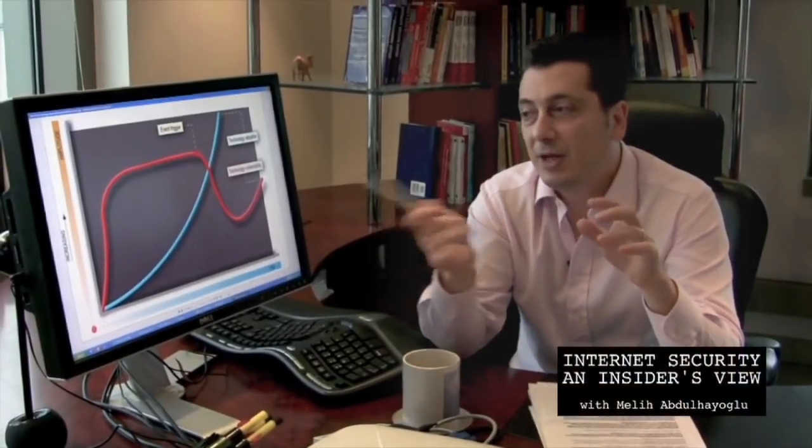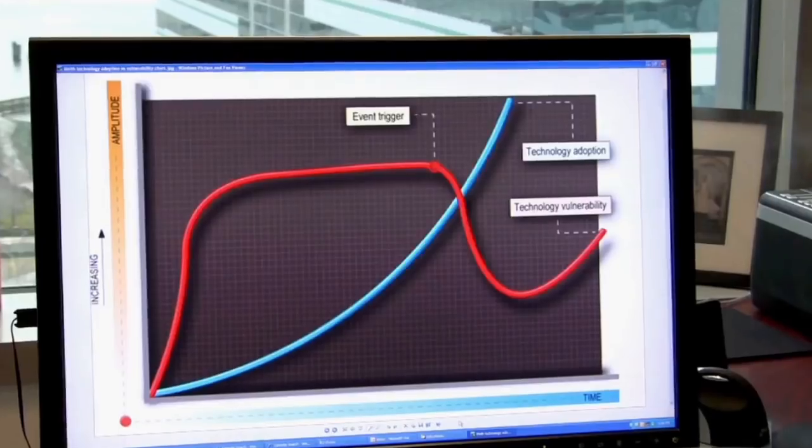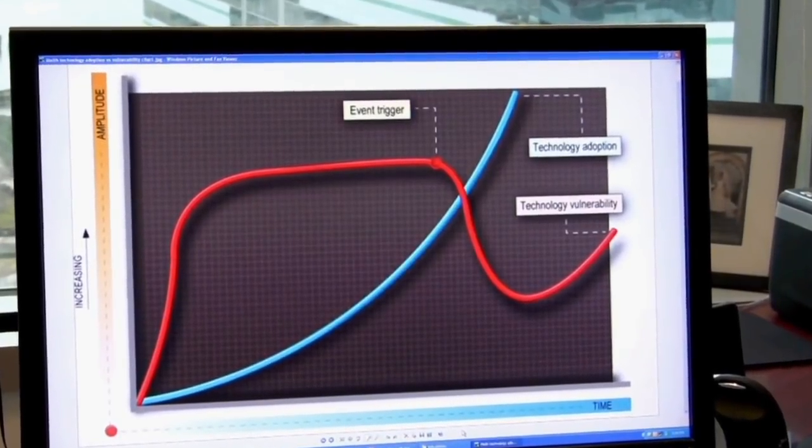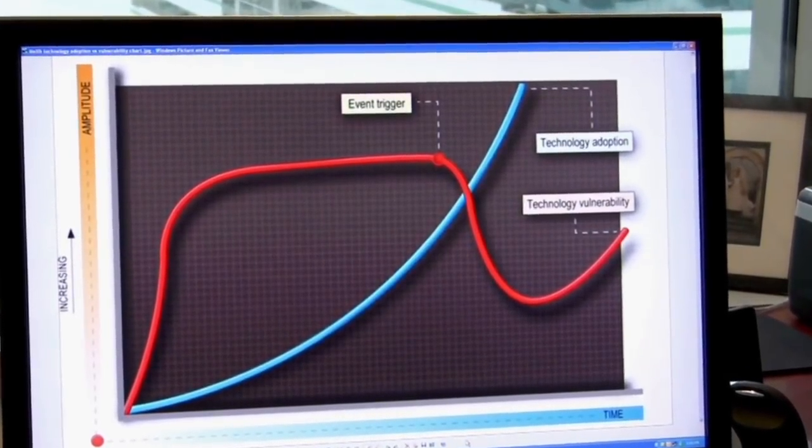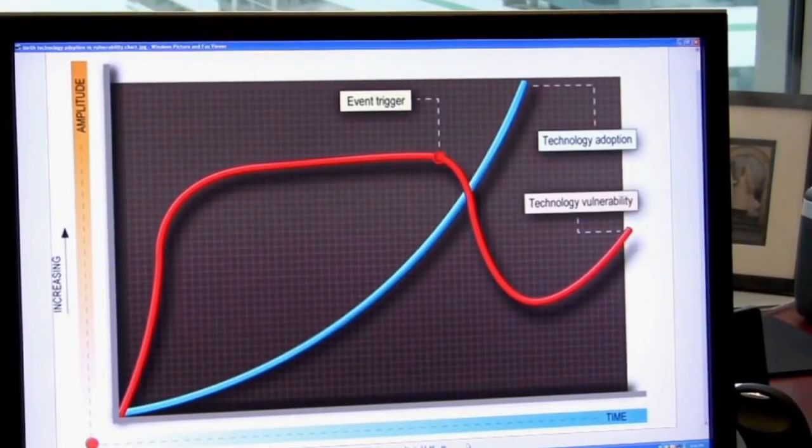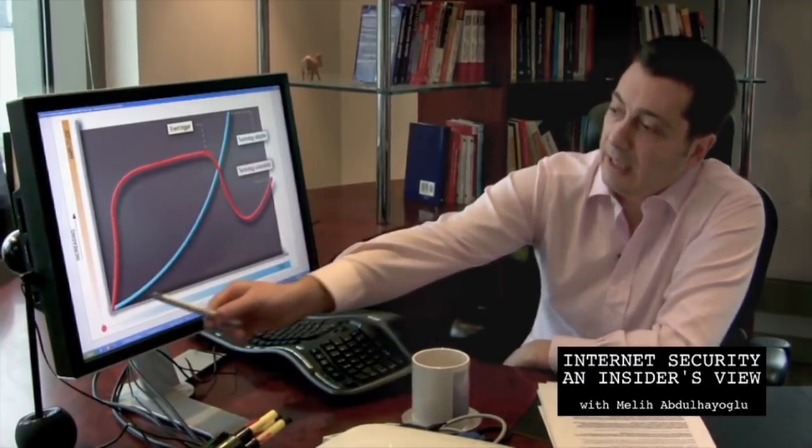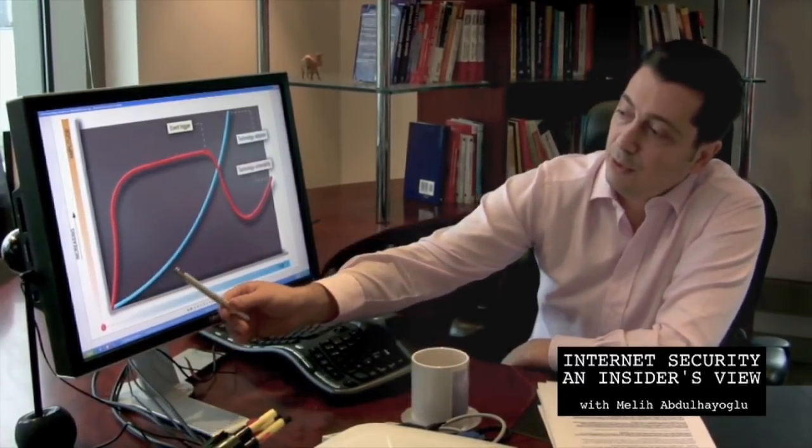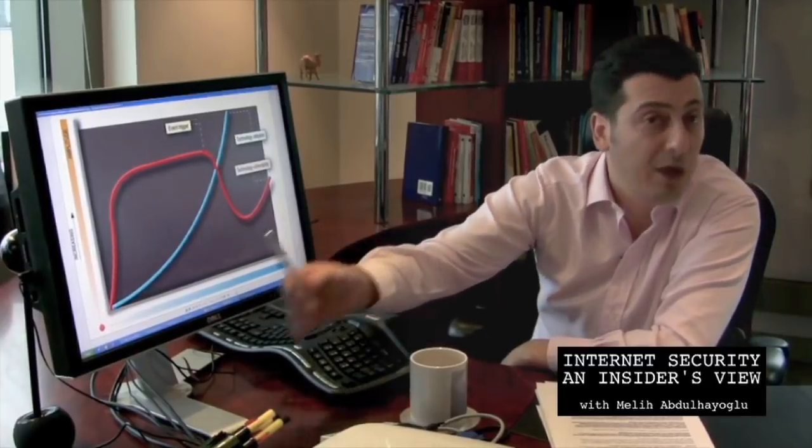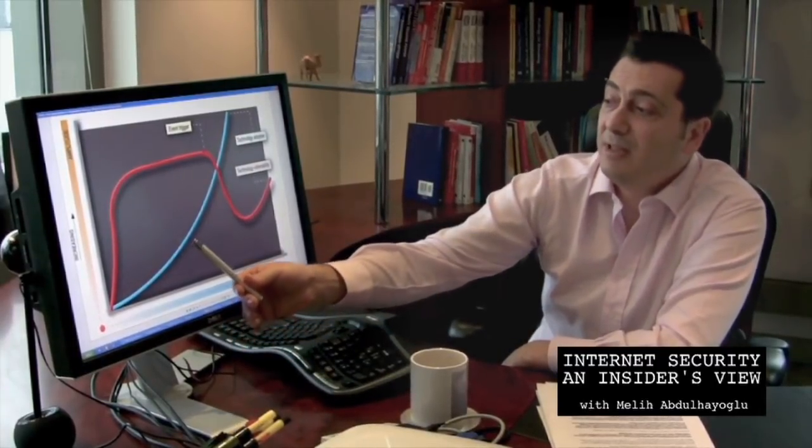I want to talk about a chart that explains how we as a human race start depending on a technology and how our vulnerability increases. Here in blue you can see how the human race starts building dependency on a technology.